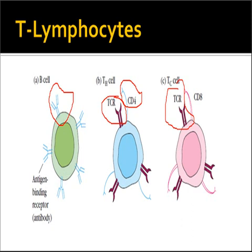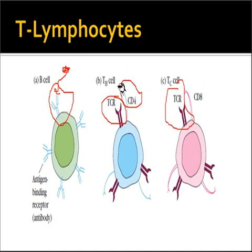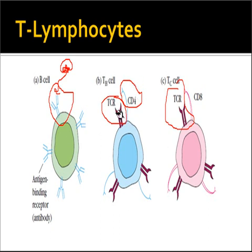One key difference between B cells and T cells is that B cells can directly bind to circulating antigens — they recognize them and bind to the antibody molecules present on their surface. But T cells cannot directly bind to antigen molecules. Instead, antigens must be presented to T cells by antigen presenting cells (APCs), and the antigen bound to the APC then gets bound to the T cell receptor.